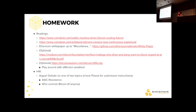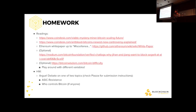This is the final Bitcoin overview lecture. The readings will cover Bitcoin current events and the Ethereum white paper, which may be a little technical but you now have a solid foundation after these four lectures. The homework is to argue one of two prompts on Piazza: one about ASIC resistance, and the other about who actually controls Bitcoin — the miners, users, journalists, or investors. That's up to you to decide.